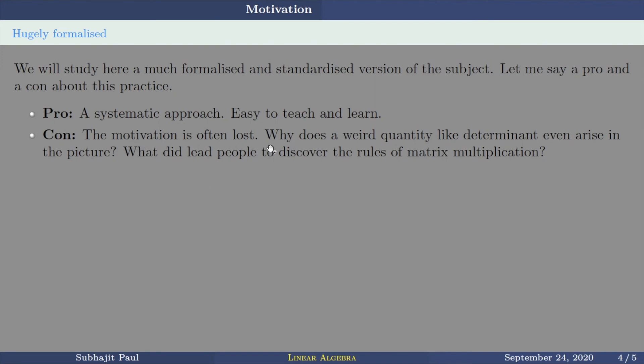Let me say a pro and con about this practice. Pro, a systematic approach. Easy to teach and learn. You will be able to learn it properly. This is a very much systematic approach what we learned today. And that is why it is very easy to teach and learn. Con is, the motivation is often lost. Why does a weird quantity like determinant even arise in the picture? What did lead people to discover the rules of matrix multiplication? These motivations are often lost. A fun fact. Determinants came before matrix. Can you imagine that? When people saw that all these techniques which are used in so many different places can be brought under one umbrella subject, they did that. And then this term, linear algebra, was given to that systematic study of those techniques.